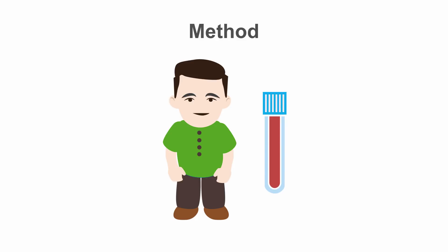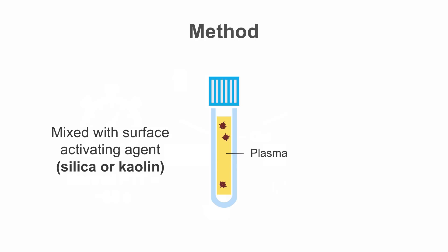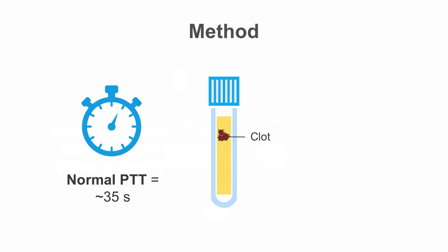Here we're going to discuss the partial thromboplastin time, or PTT. PTT is a test to measure the integrity of the intrinsic and the common pathway. To measure PTT, blood is collected in a citrate tube. Patient's platelet-poor plasma is mixed with a surface activating agent such as silica or kaolin, and platelet substitutes such as crude phospholipid are added. Clotting time is measured, and the normal PTT is up to approximately 35 seconds.